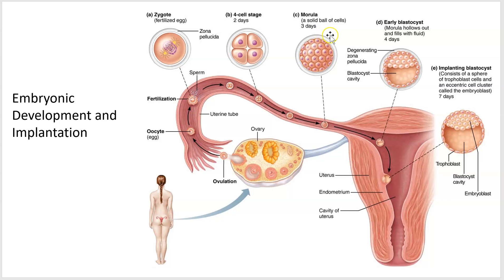The morula stays until that solid ball starts to get a hollow spot in it. As soon as it starts to get this little cavity, they call it a blastocyst. The blastocyst is basically the equivalent stage to the blastula you saw from the sea star in lab, but these guys have to implant — and 'cyst' implies something buried or embedded.